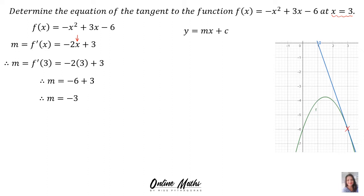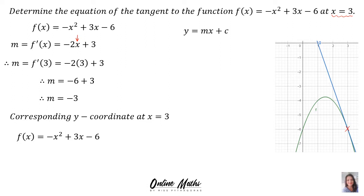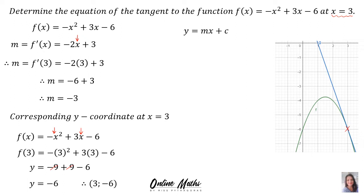Next, you need to find the corresponding y-coordinate at the point x = 3. On the sketch it's clear the y-coordinate is -6, but in the exam you have to calculate it. The rule is: every x has an original y value, so you substitute x = 3 into the original function f(x). Substituting gives -9 + 9 - 6; since -9 + 9 = 0, the corresponding y-value at x = 3 is -6.